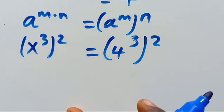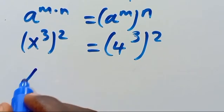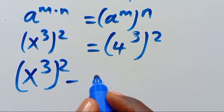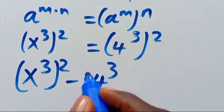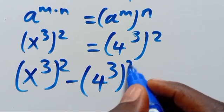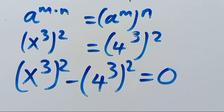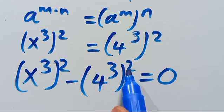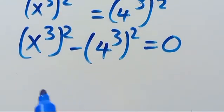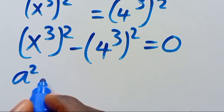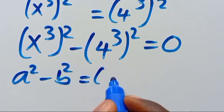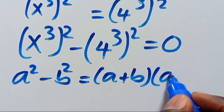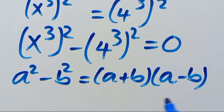Then we transfer everything to one side and set it equal to zero, giving us: x cubed, in parentheses, to the power of 2, minus 4 cubed, in parentheses, to the power of 2, equals 0. This is a difference of two squares, since each term is raised to the power of 2.